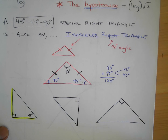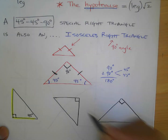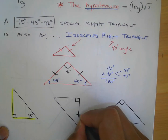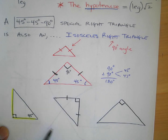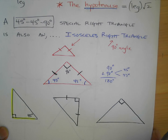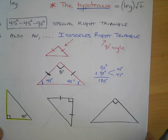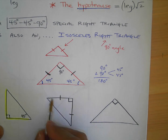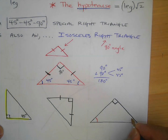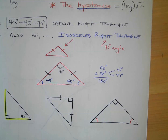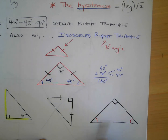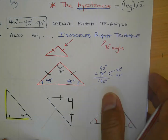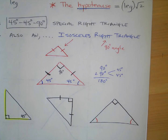Another way they'll show you is by using symbols or marks. Sometimes they won't write 45, but they'll put congruency marks on the angles — if those two angles are marked congruent and the right angle is 90, that makes them 45 and 45, so it's a 45-45-90. They might also just mark the sides congruent instead of the angles. Either way, if this is 90 and these two are congruent, it has to be 45. On the next video we'll go over how to do the work on the assignment.